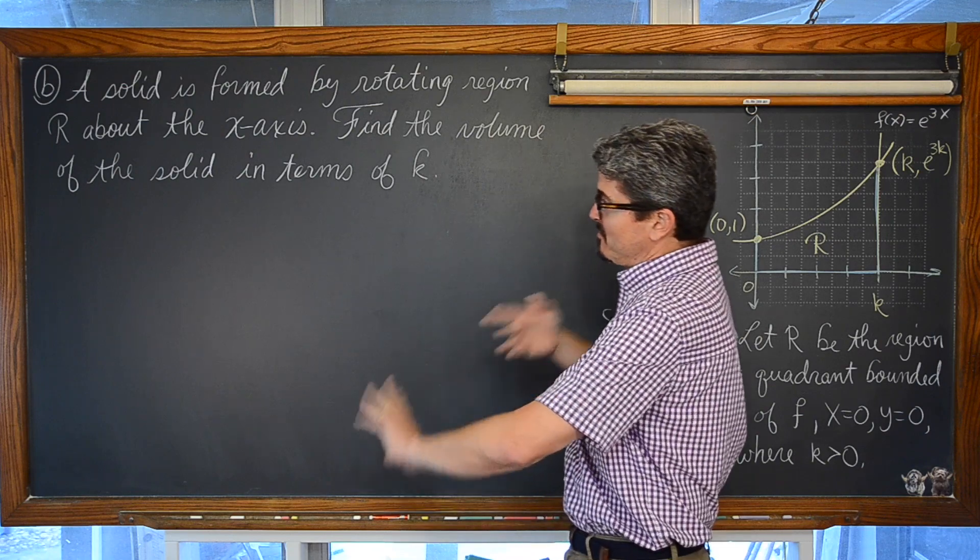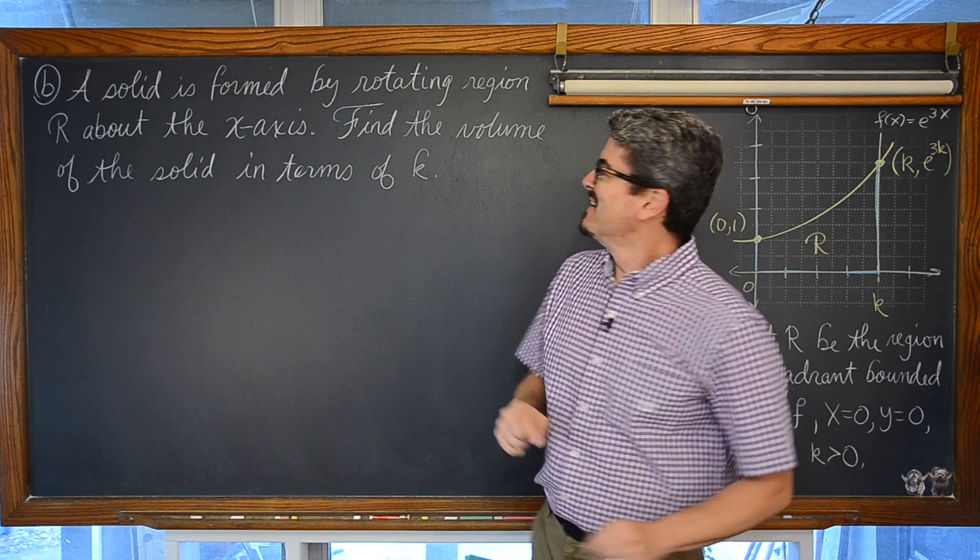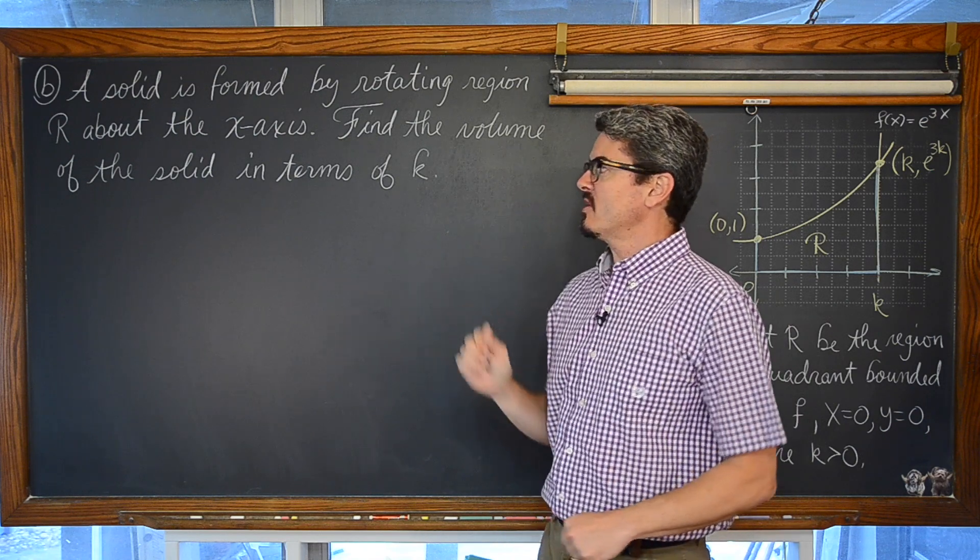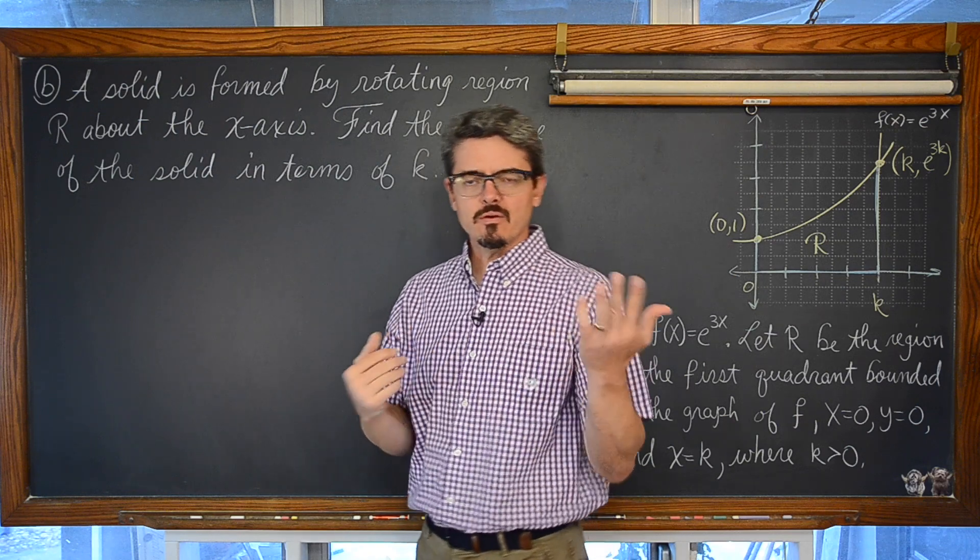Alrighty. Part B. A solid is formed by rotating region R about the x axis. Find the volume of the solid in terms of k.